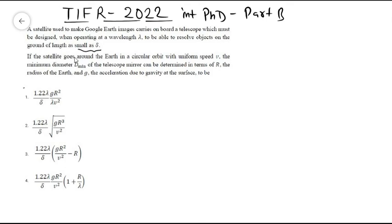If the satellite goes around the earth in a circular orbit with uniform speed V, we need to find the minimum diameter of the telescope mirror in terms of R, the radius of the earth, and g, the acceleration due to gravity at the surface of the earth.